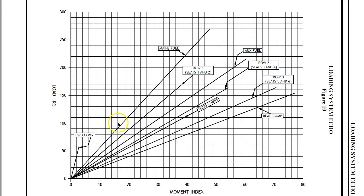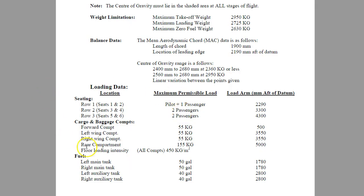So let's just do a little bit of maths so you can see how that works out. Now, if you come back up to this page on the echo instructions, you'll see here that the left main tank and the right main tank are at a distance of 1,780 mm from the datum.